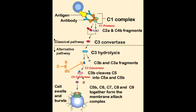What would be the consequence of C5 to C9 deficiencies? C5 to C9 is needed to make up the membrane attack complex. So when this is not able to happen, it would lead to recurrent Neisseria bacteremia.